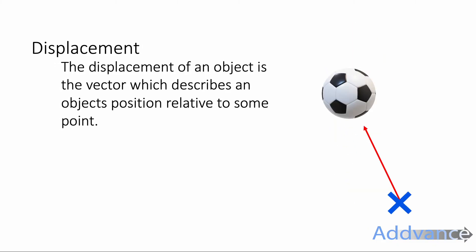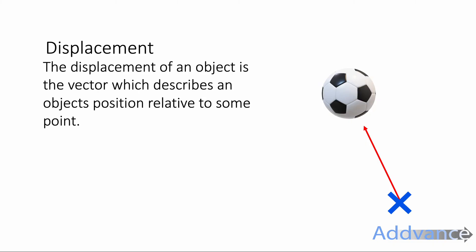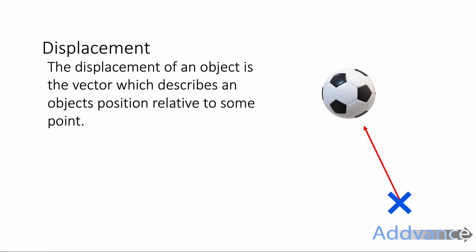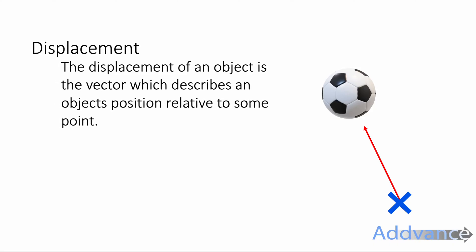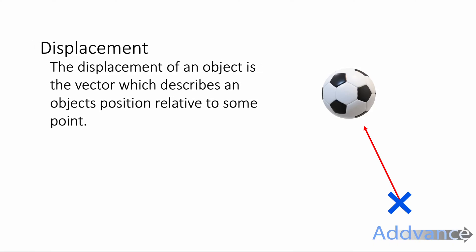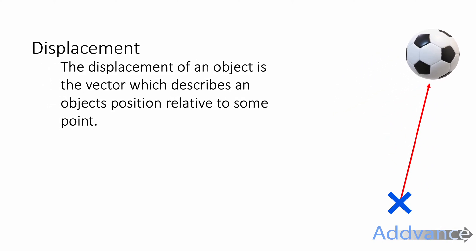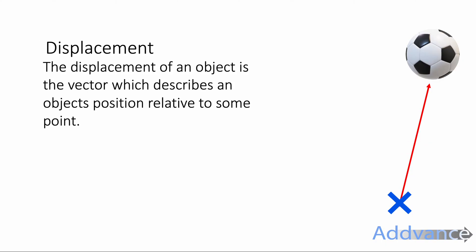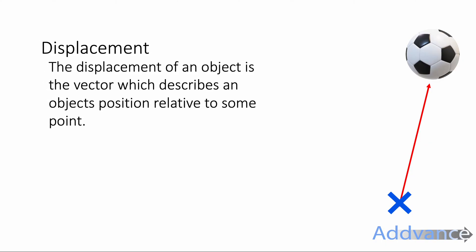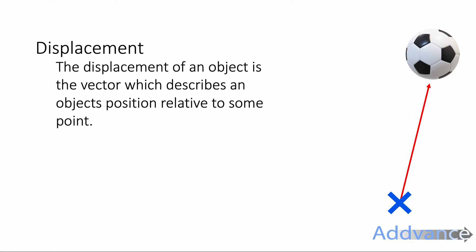Imagine the ball was here and we were measuring the displacement from point X. The red arrow will represent the displacement — that's how far, and in what direction, the ball is from the point. Then it moves to another point, and the displacement is the red arrow again, a different distance but also a different direction, and that distance and direction is given by the displacement.